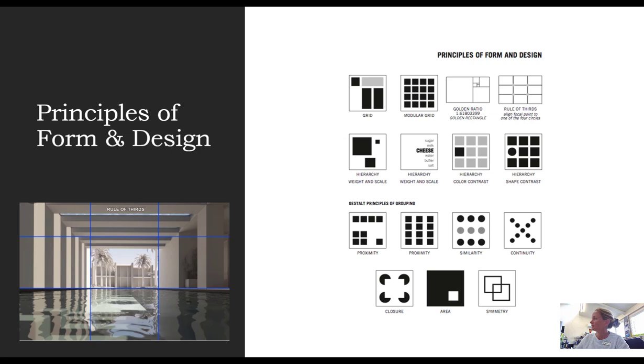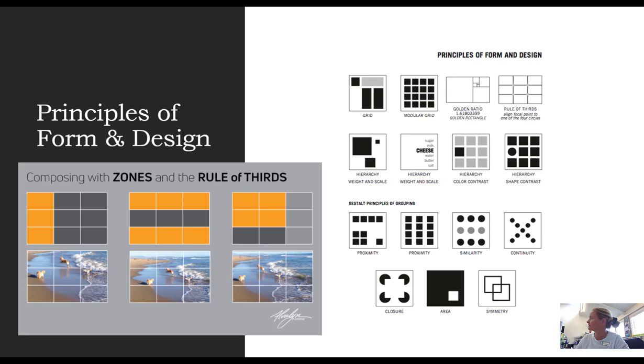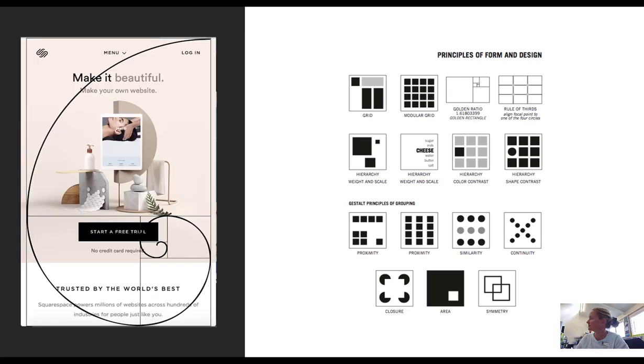We also have other considerations when we look at principles of form and design. And these are tips of the trade that designers use in trying to enhance their designs. So you can see grids, golden ratio, the rule of thirds, hierarchy.